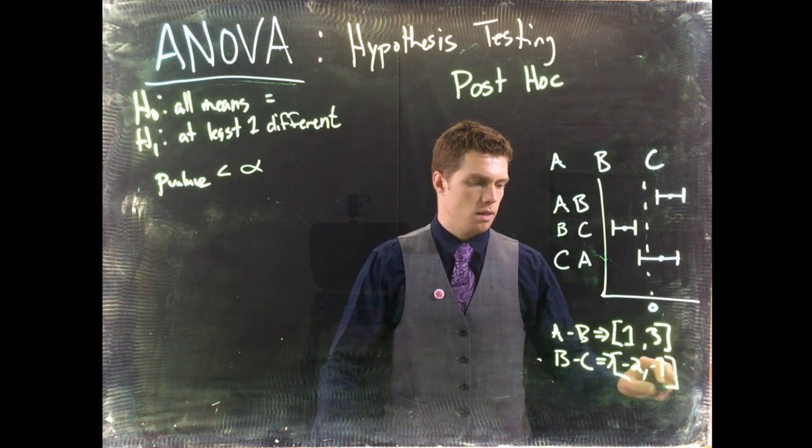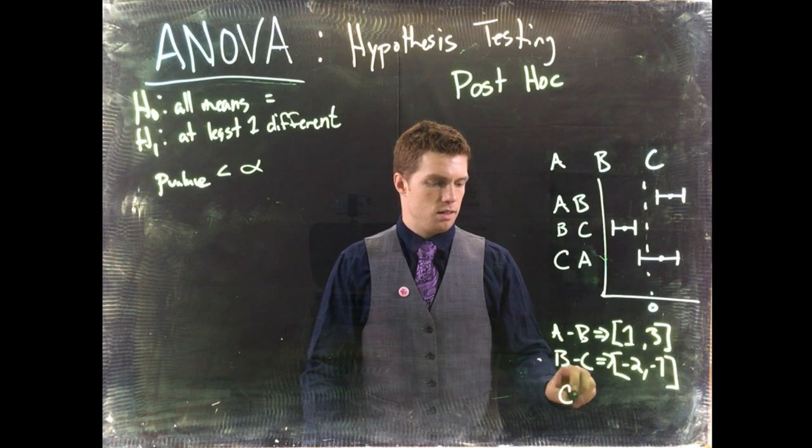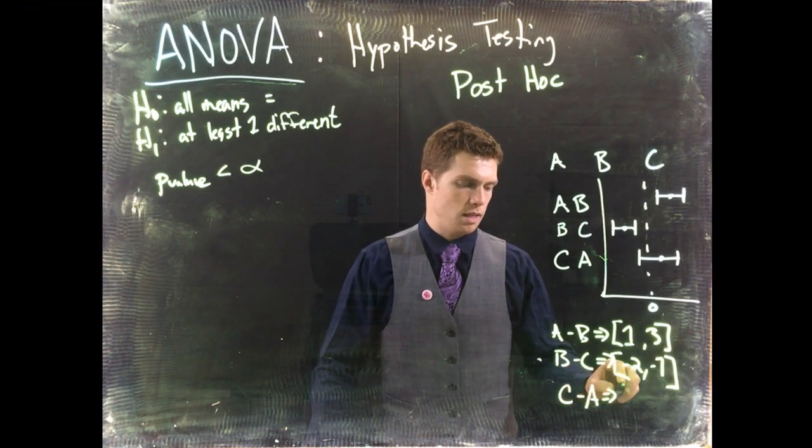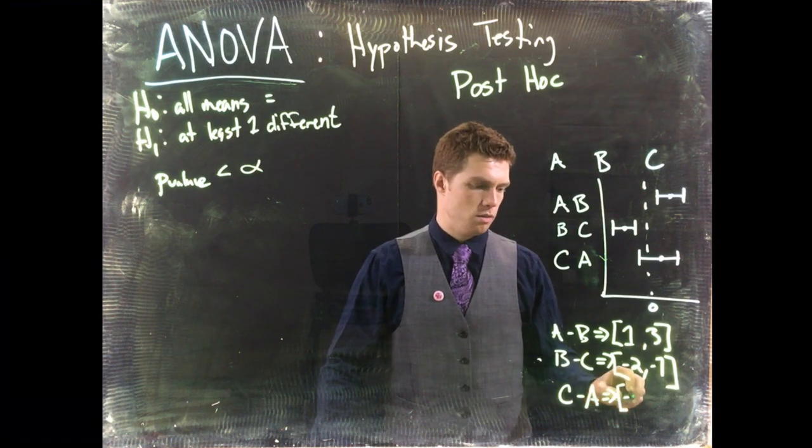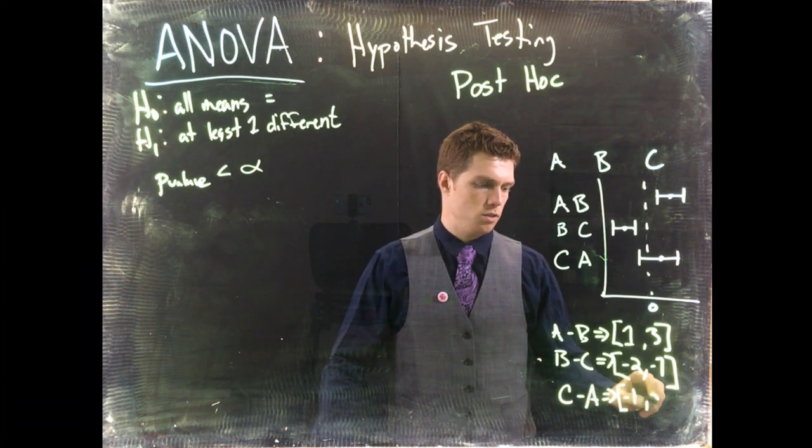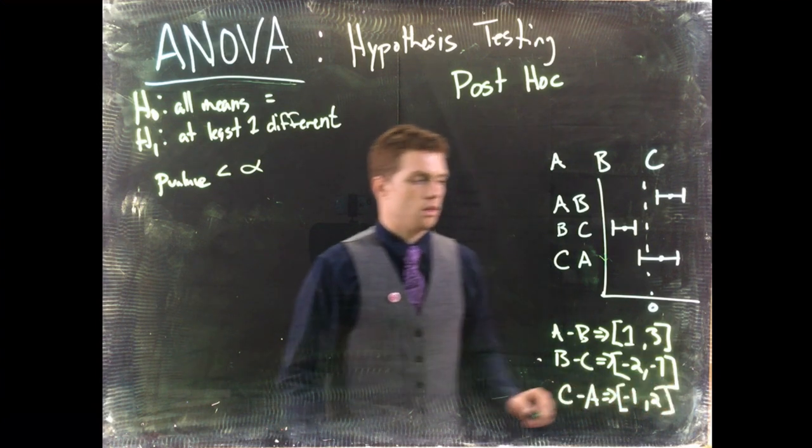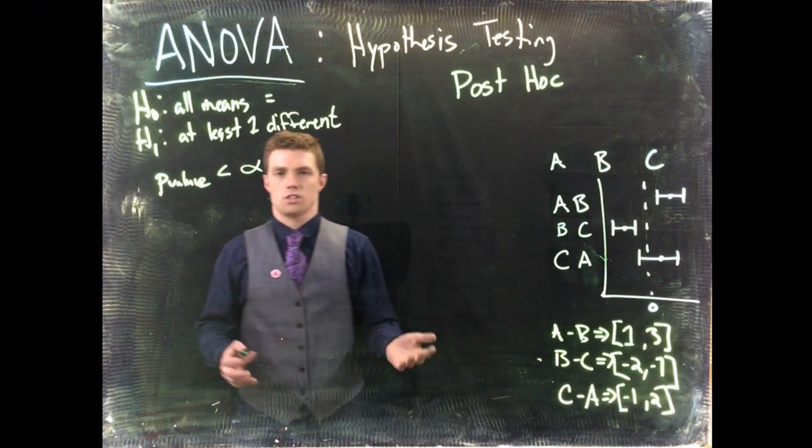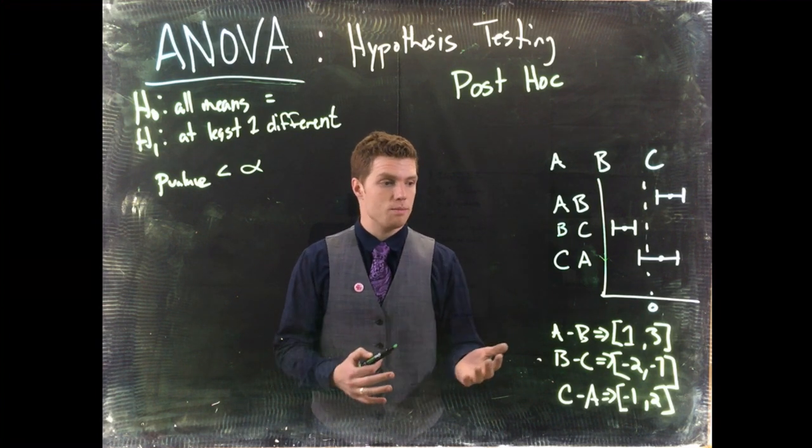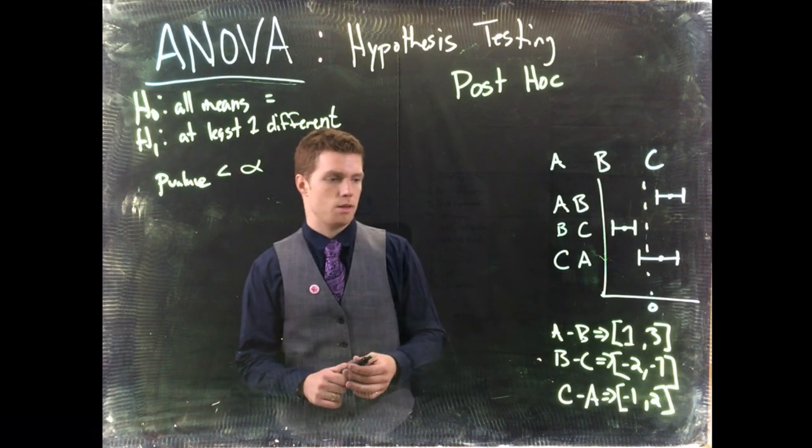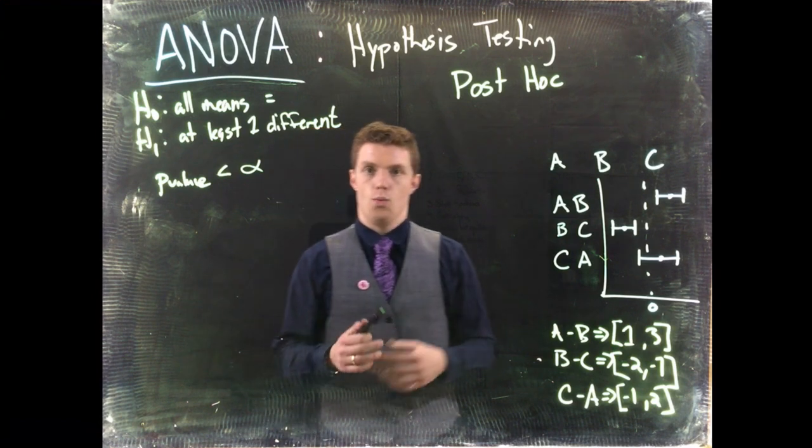And then C minus A would give us something like negative 1 comma 2. Okay so let's suppose that's our confidence intervals. How do we talk about this? There's three of them, some of them are significant, some of them are not significant. What do we do?